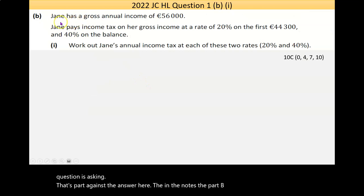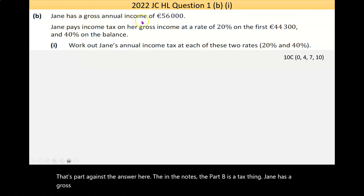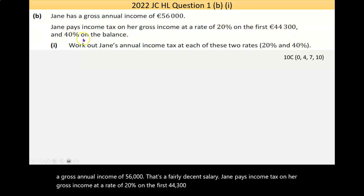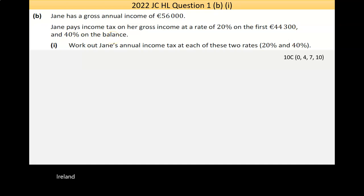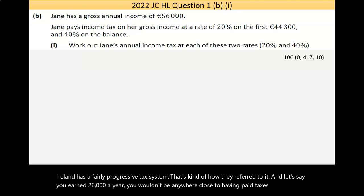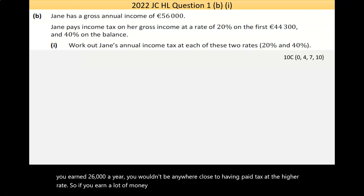Now part B is a tax thing. Jane has a gross annual income of €56,000. That's a fairly decent salary. Jane pays income tax on her gross income at a rate of 20% on the first €44,300, and then 40% on the balance. Now Ireland has a fairly progressive tax system. If you earned €26,000 a year, you wouldn't be anywhere close to having to pay tax at a higher rate. So if you earn a lot of money, you pay more tax the more you earn. That's what progressive means.